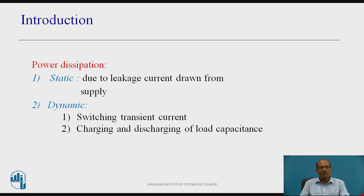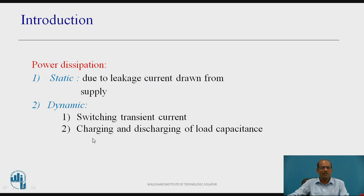In the introduction, power dissipation basically consists of two elements. First is Static Power Dissipation, which is due to the leakage current drawn from the supply. The second element is Dynamic Power Dissipation, which consists of switching transient currents at the time of switching and the charging and discharging of the load capacitance.